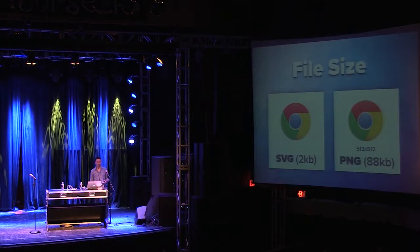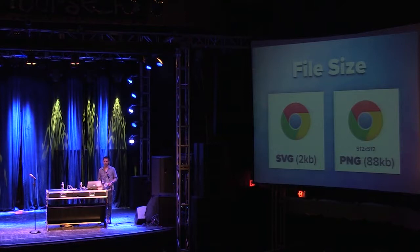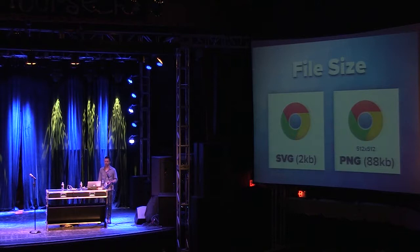Another big difference can be file size. The Chrome logo in SVG is about 2K, which is a pretty good size. If you had a high quality PNG graphic at about 512 by 512, it would need to be more like 88K. This is a really big difference, especially as we're trying to slim down sites to make them load faster, especially on smartphones.